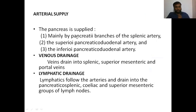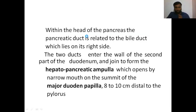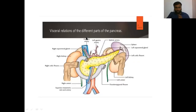The last point is arterial supply, venous and lymphatic drainage. The arterial supply is mainly from the pancreatic branches of the splenic artery, the superior pancreaticoduodenal artery, and the inferior pancreaticoduodenal artery. The main supply is from pancreatic branches of the splenic artery.